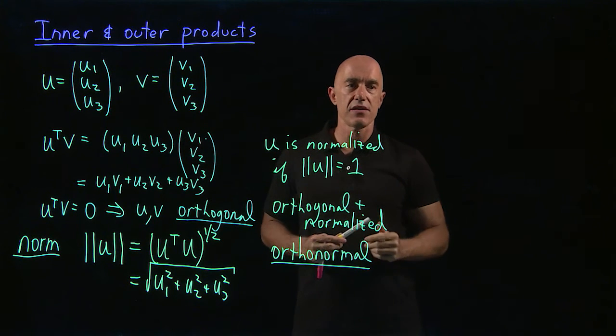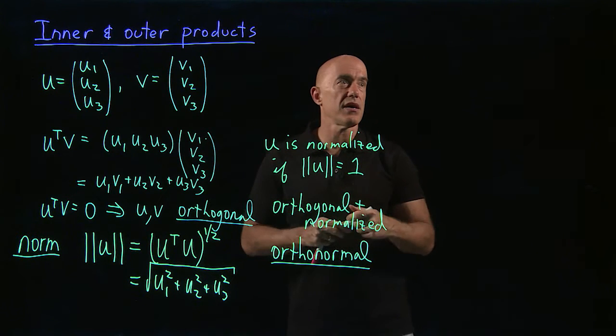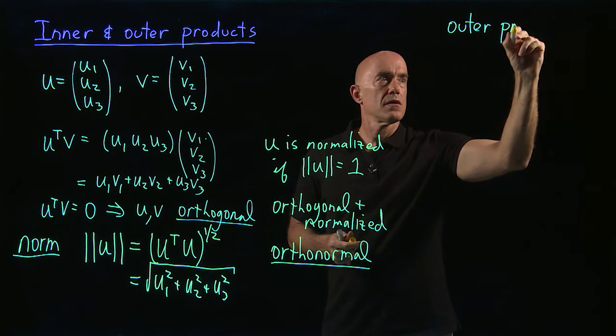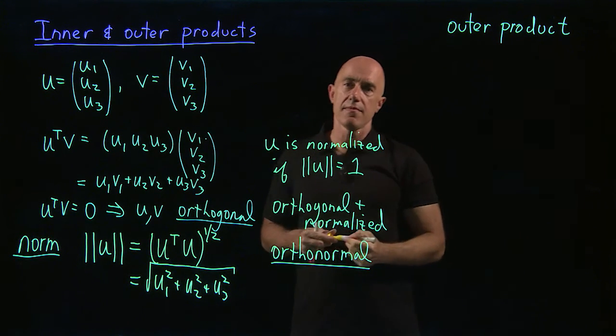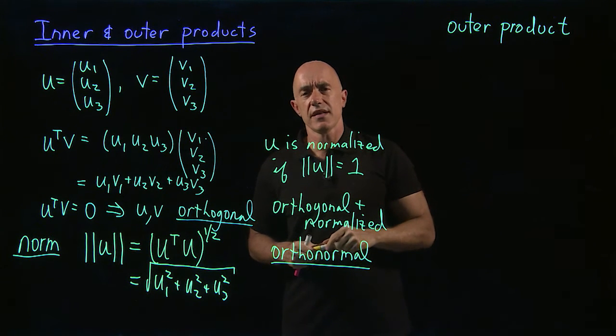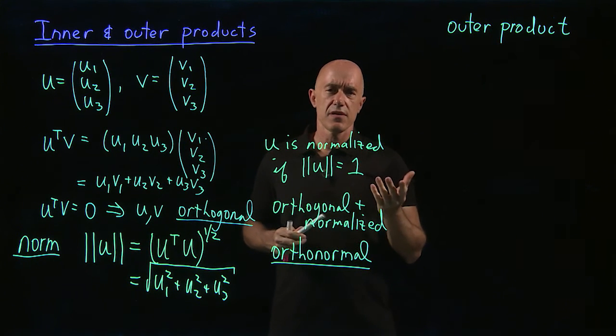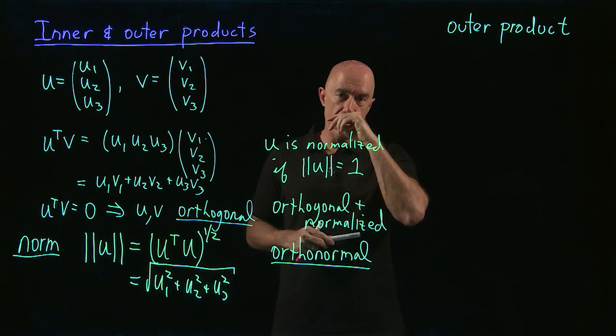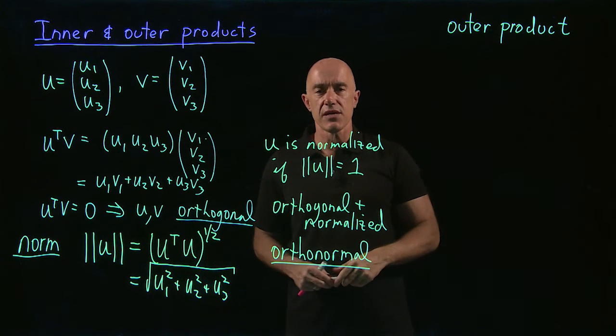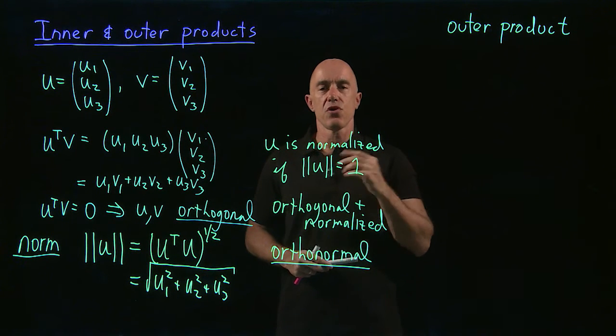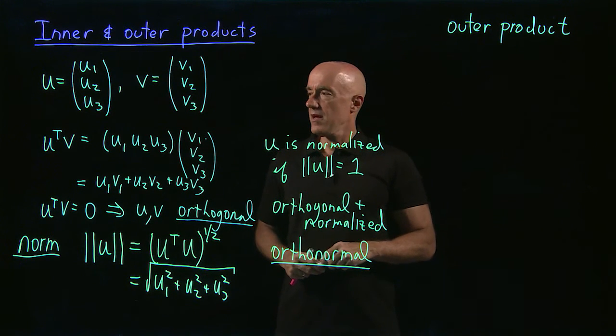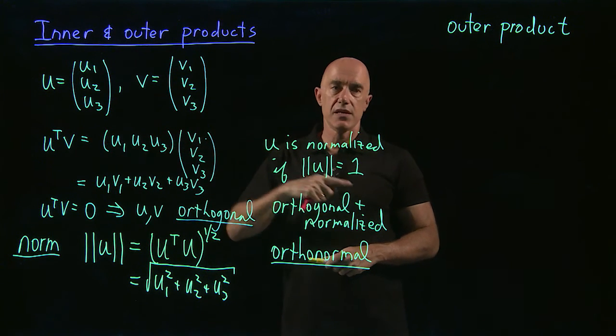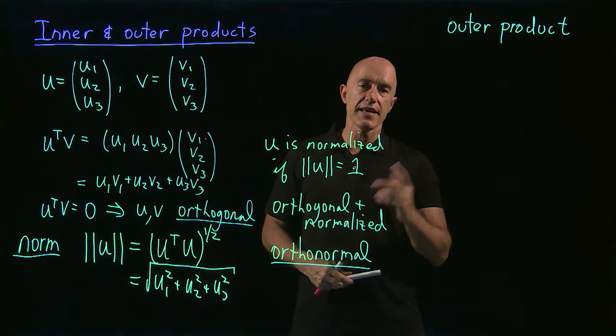So this is all about inner products. Let's see what is the outer product? The inner product is used all the time. The outer product is not really used that often. But there are some numerical methods, there are some techniques that make use of the outer product. So as a student in matrix algebra, you should know what an outer product is. The inner product between two vectors was u transpose v for two column vectors. That gave us a scalar.